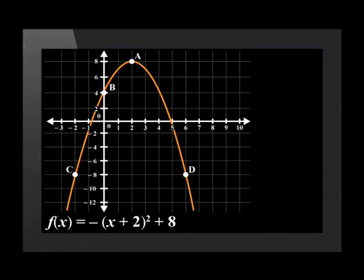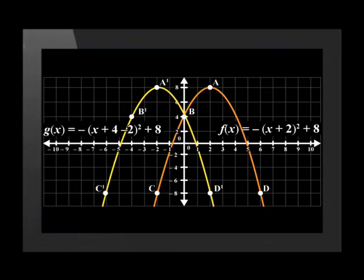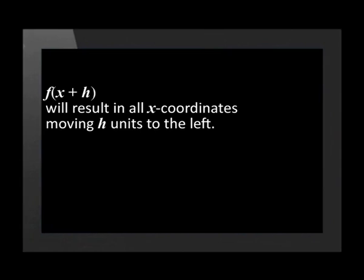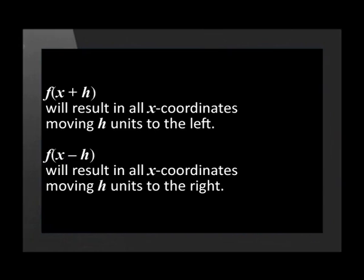This skill can sometimes be a bit confusing. So let's look at one more example together. Here is the function. F of X is equal to negative X plus two squared plus eight. It is marked by points A, B, C, and D. Now let's move it four units to the left. All of the points have moved four units to the left. Now this graph is represented by G of X equals negative, open brackets, X plus four, minus two, close brackets, squared, plus eight. This shows us that F of X plus H will result in all X coordinates moving H units to the left. F of X minus H will result in all X coordinates moving H units to the right.